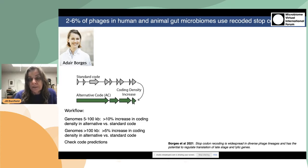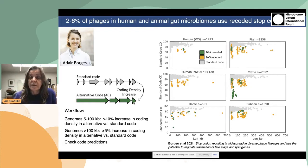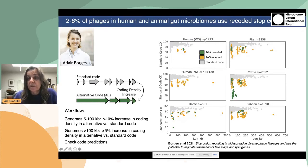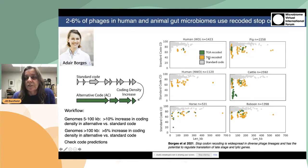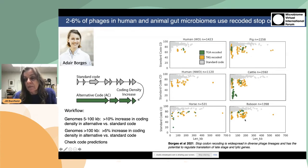She applied this analysis to many different groups divided by subject type. In the plot, she showed coding density when genes are predicted using code 11, comparing humans that eat a Western diet, humans eating a non-Western diet, horses, pigs, cattle, and baboons. In the Western diet, relatively few phages are alternatively coded, and both TGA and TAG recoding have occurred. In humans eating a non-Western diet, recoding is much more prevalent, but so far only TAG recoding. In other animal cohorts, there are sometimes many phages that show evidence of alternate coding, both TAG and TGA recoding.